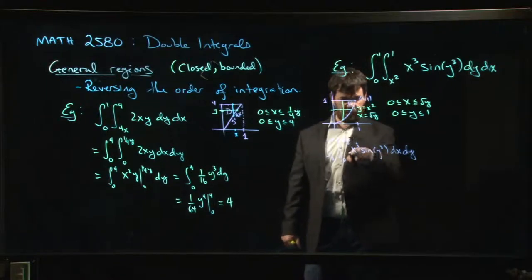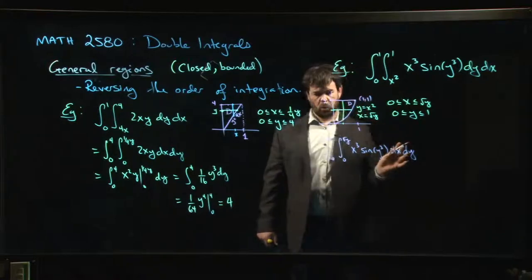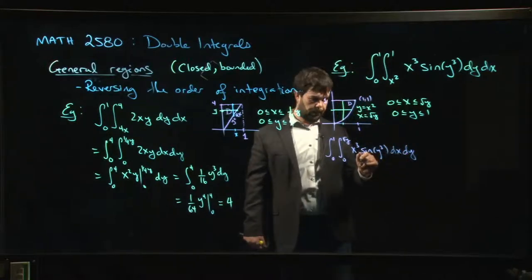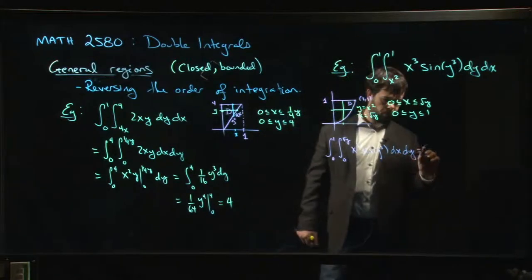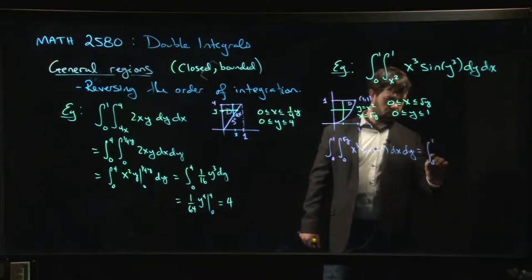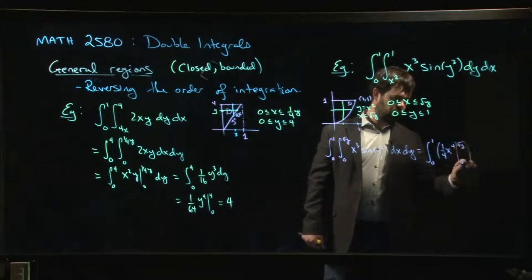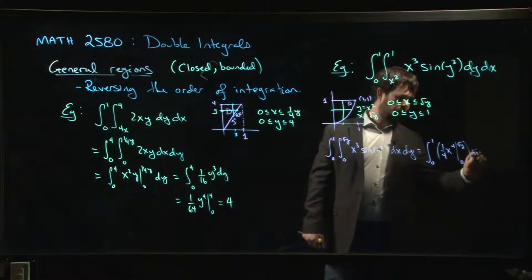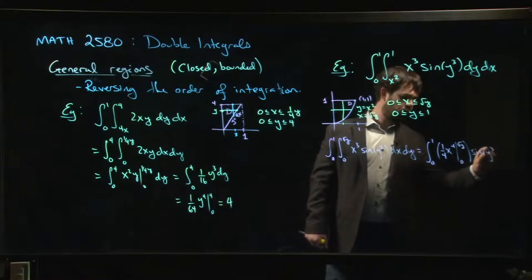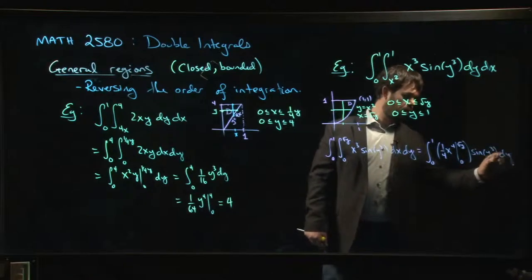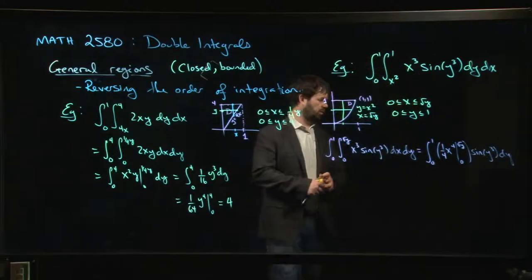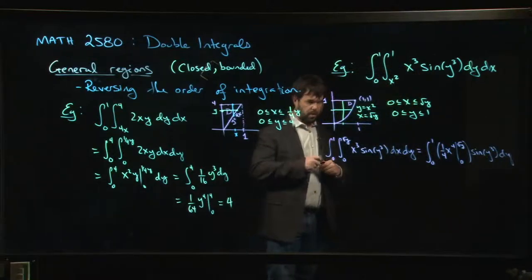Okay, well the good news here is we don't have to worry about this sine function yet, because we're just dealing with the x antiderivative of x cubed, one quarter x to the 4. So we have one quarter x to the 4, our limits are 0 and root y, and then we have that sine y cubed, and we need to integrate with respect to y.